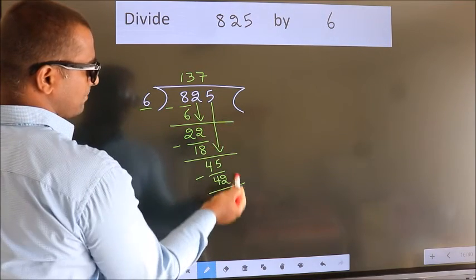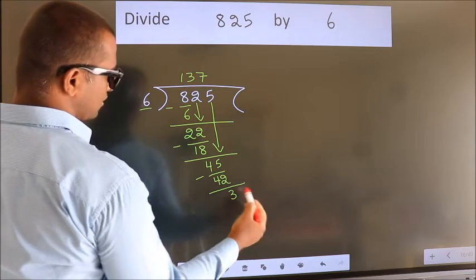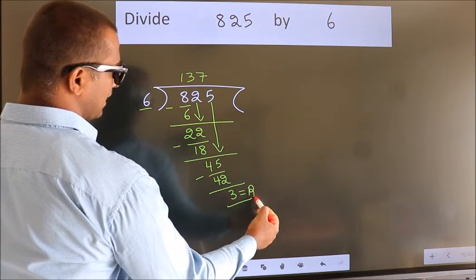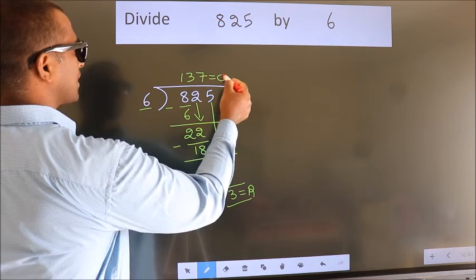No more numbers to bring it down. So, we stop here. This is our remainder. This is our quotient.